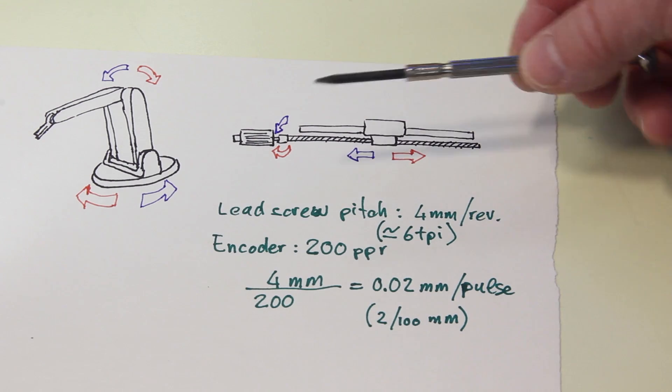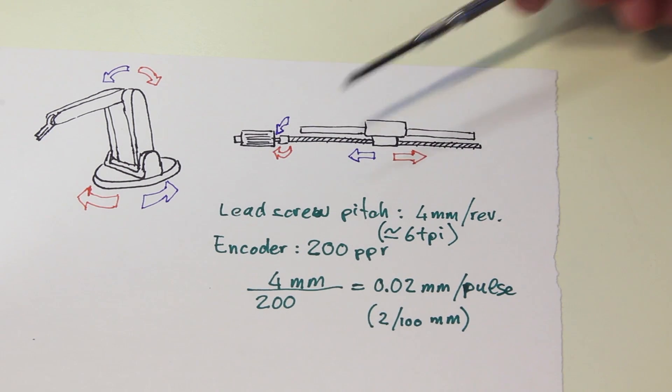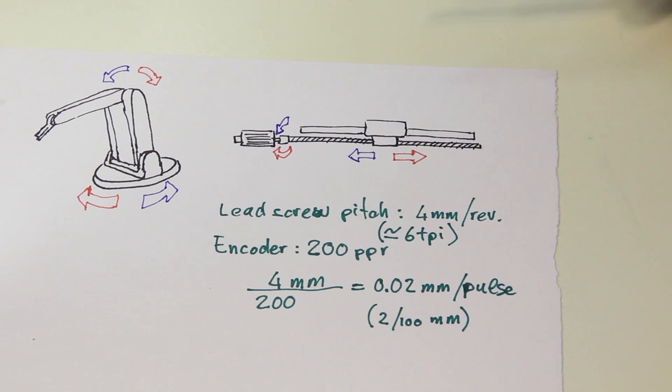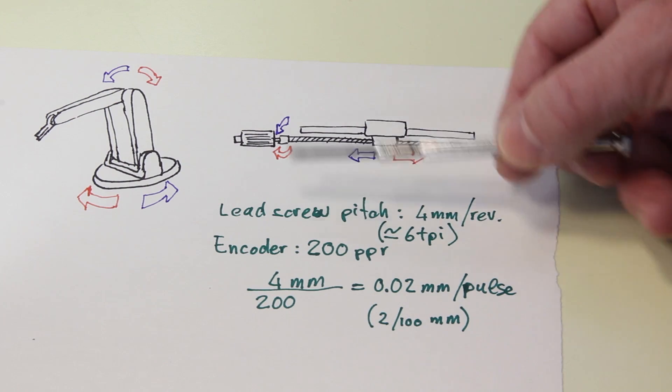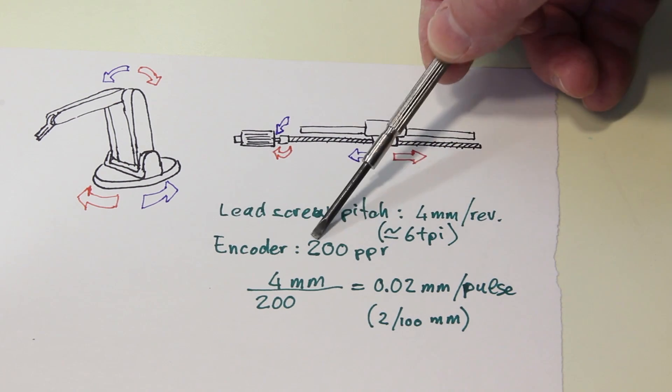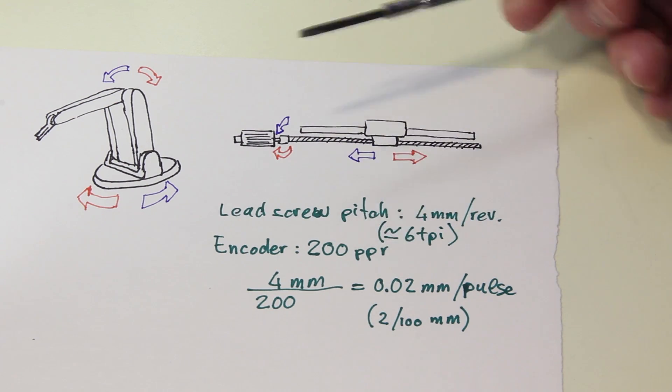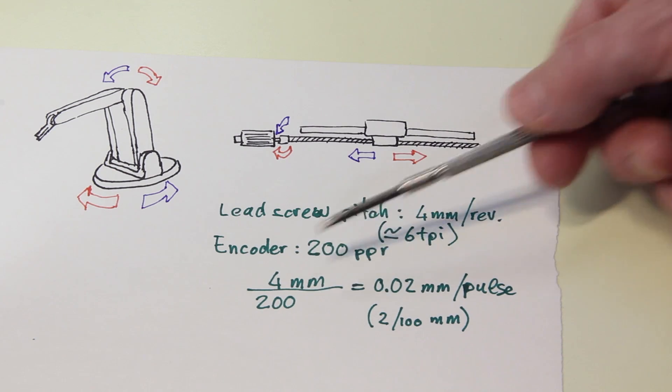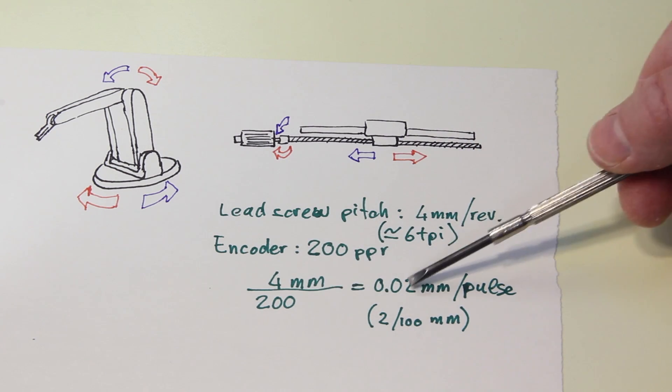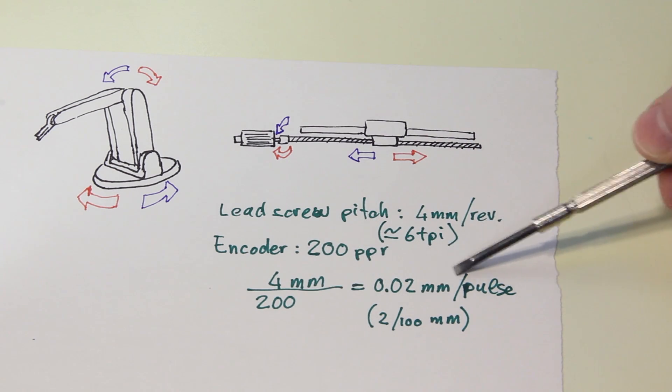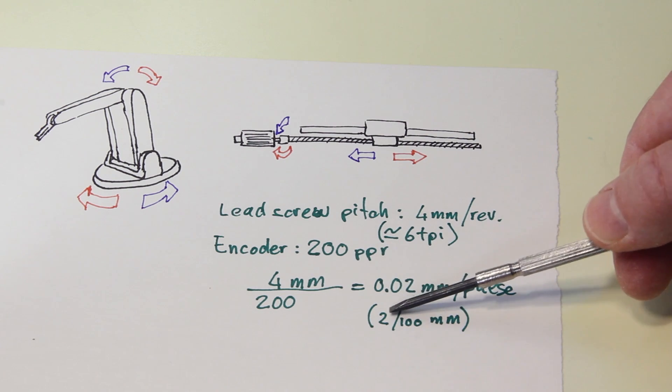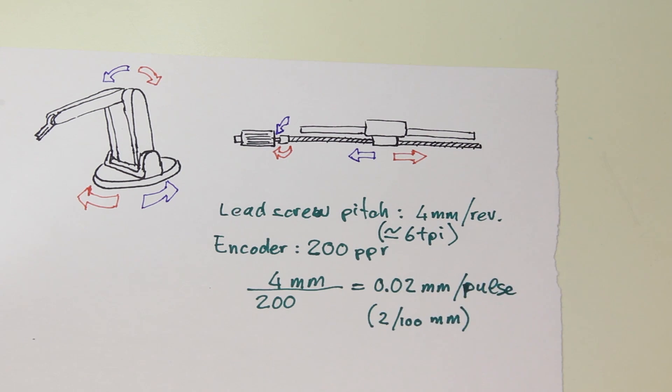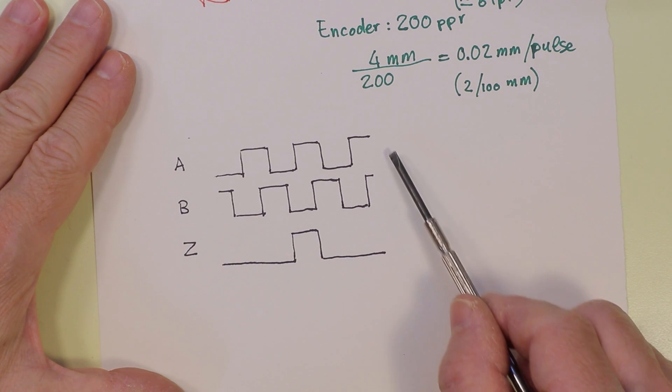So for example, let's say you have a lead screw that has a pitch of 4 millimeters per revolution, which is about 6 turns per inch, and with an encoder of 200 pulses per revolution, you can reach a resolution of 4 over 200, 0.02 millimeters per pulse, or 2/100 of a millimeter.